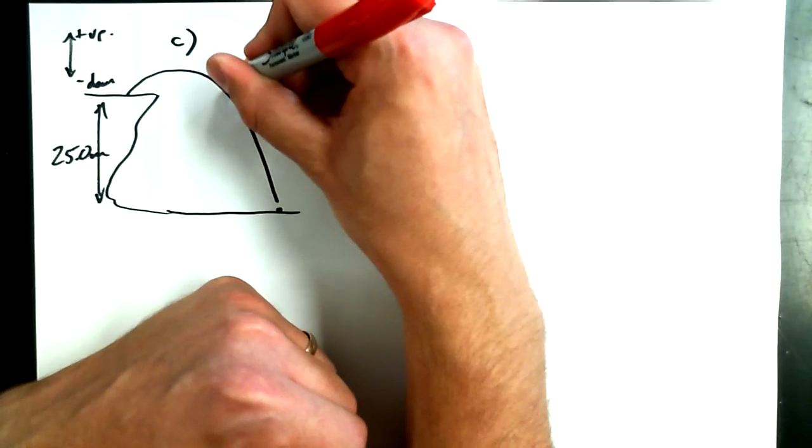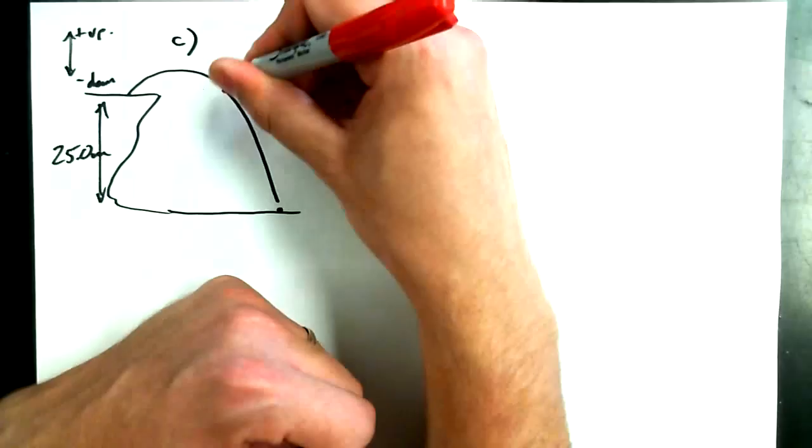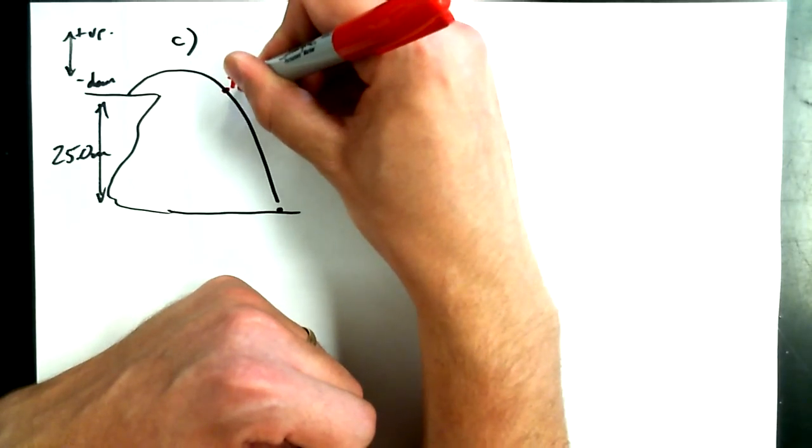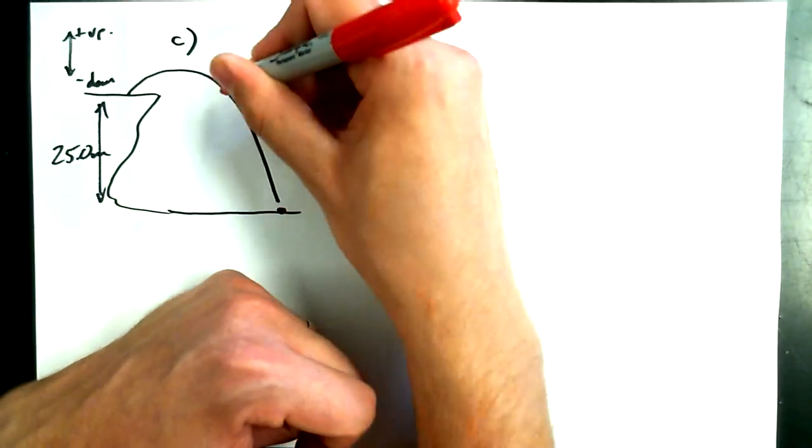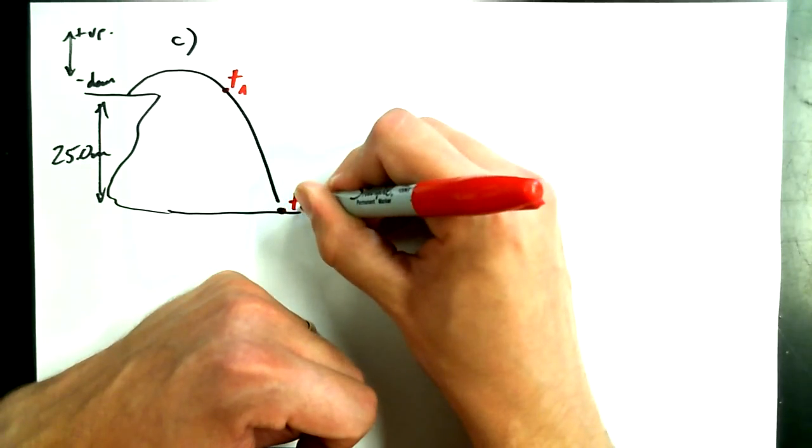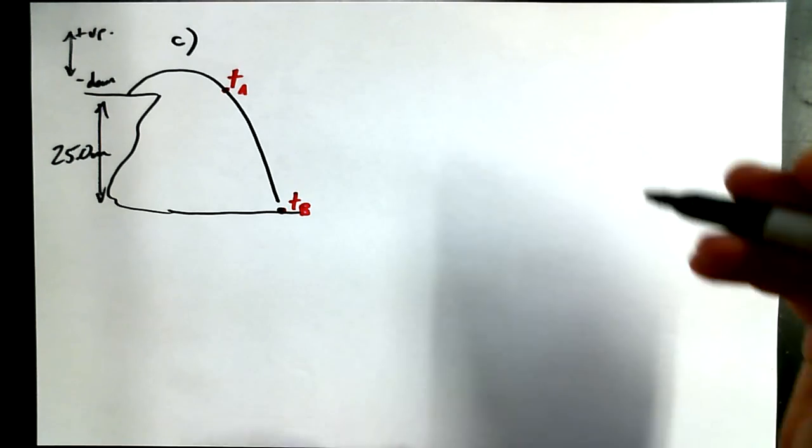We know that its vertical displacement is 25 meters downwards by the time it lands again. We've called down negative and up positive. I want to figure out what the total flight time is. Now, earlier on in this problem, we figured out how much time it takes to get to this point here. I'm just going to call it time A. Add them up.